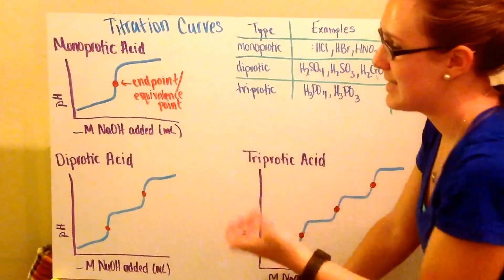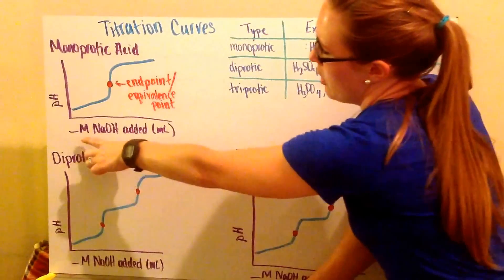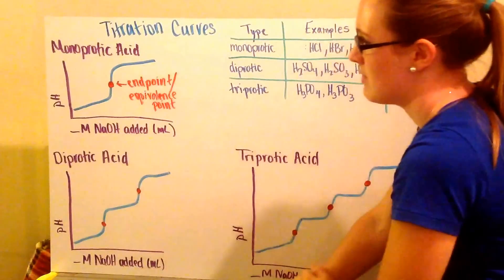The acids are going to be my analytes. I'm putting in my titrant of a known molarity. In this case, I'm going to use sodium hydroxide and I add it via milliliters.